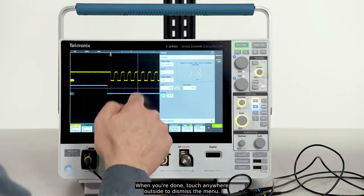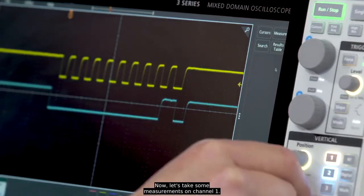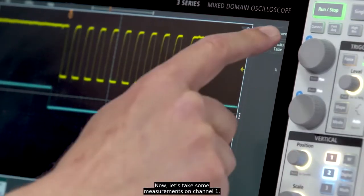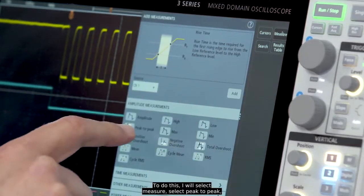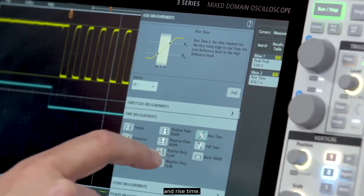When you're done touch anywhere outside to dismiss the menu. Now let's take some measurements on channel 1. To do this I will select measure, select peak to peak, and rise time.